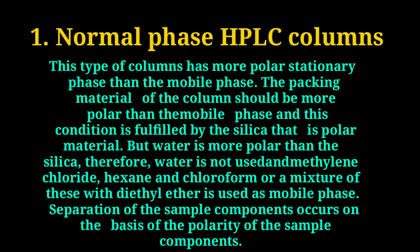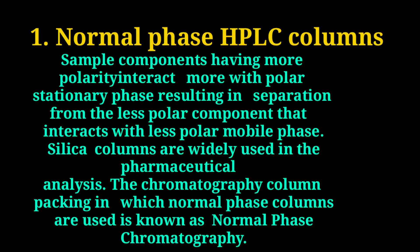Number one: normal phase HPLC columns. This type of column has a more polar stationary phase than the mobile phase. The packing material of the column should be more polar than the mobile phase, and this condition is fulfilled by silica, which is a polar material. However, water is more polar than silica, therefore water is not used. Methylene chloride, hexane, and chloroform, or a mixture of these with diethyl ether, is used as the mobile phase. Separation of the sample components occurs on the basis of polarity — sample components having more polarity interact more with the polar stationary phase, resulting in separation from the less polar components that interact with the less polar mobile phase.